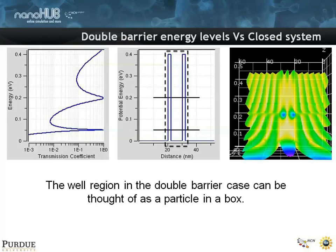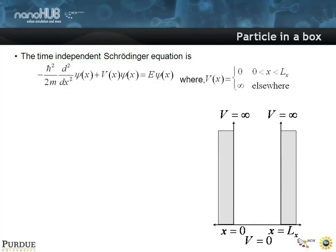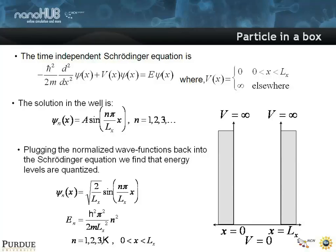Let's make this more concrete. Let me remind you of the particle in a box problem — it's the time-independent Schrödinger equation for the case where inside the box you have zero potential and outside you have infinite potential. You've done this exercise. The solutions are simple sine waves, and the energy levels are discrete. You have a ground state, an excited state, next excited state, and so on.